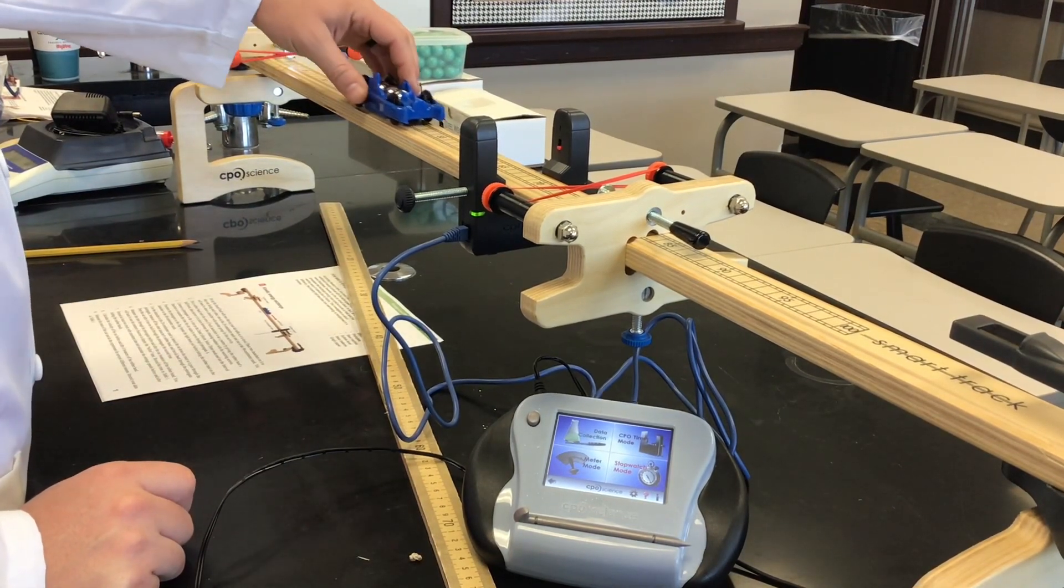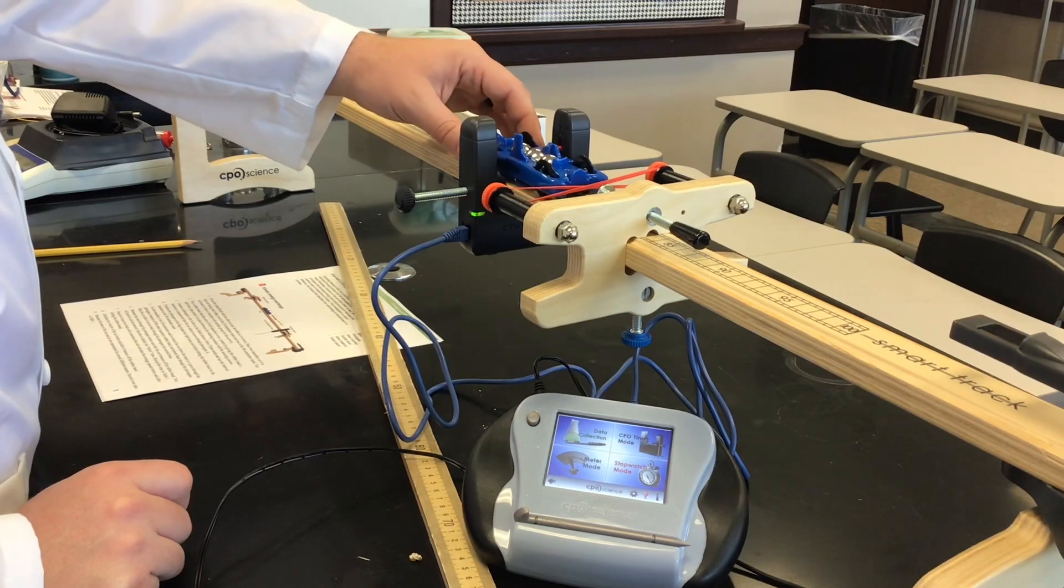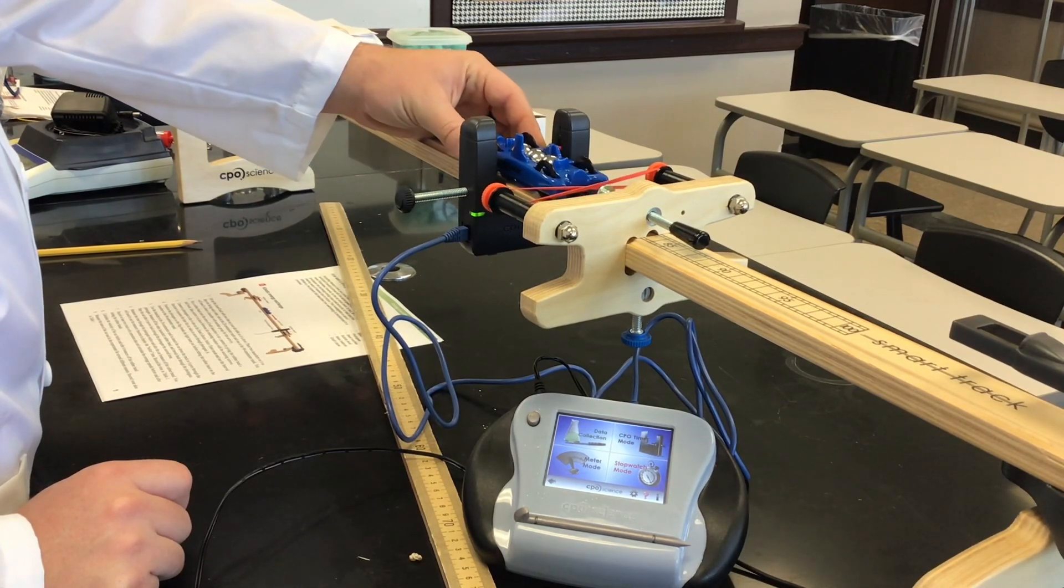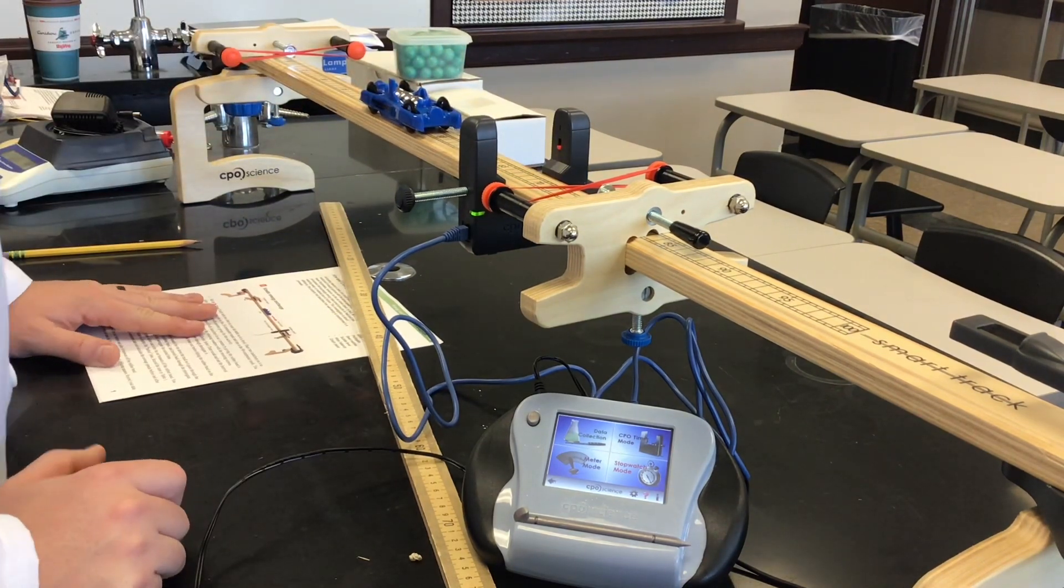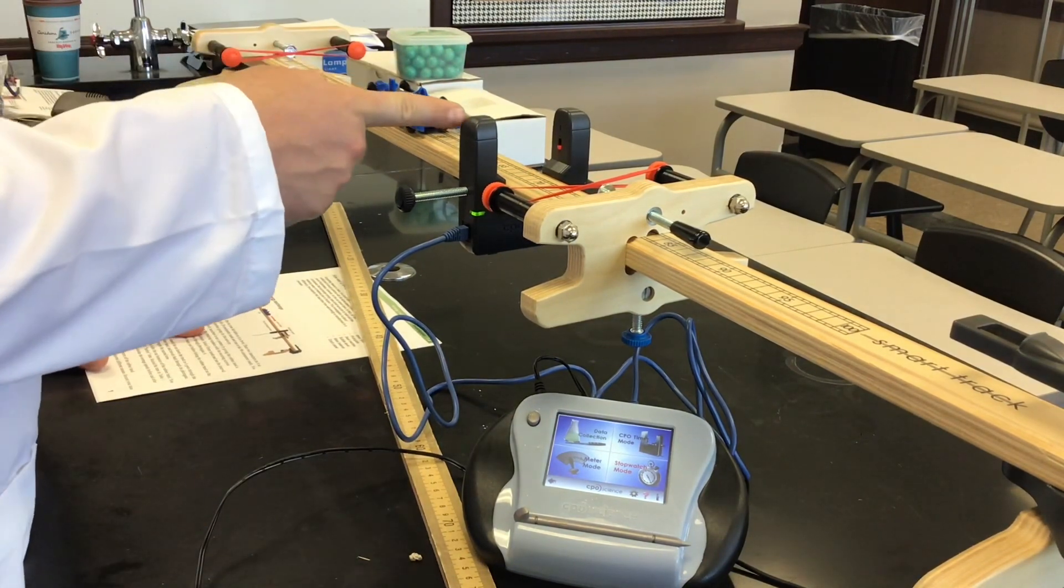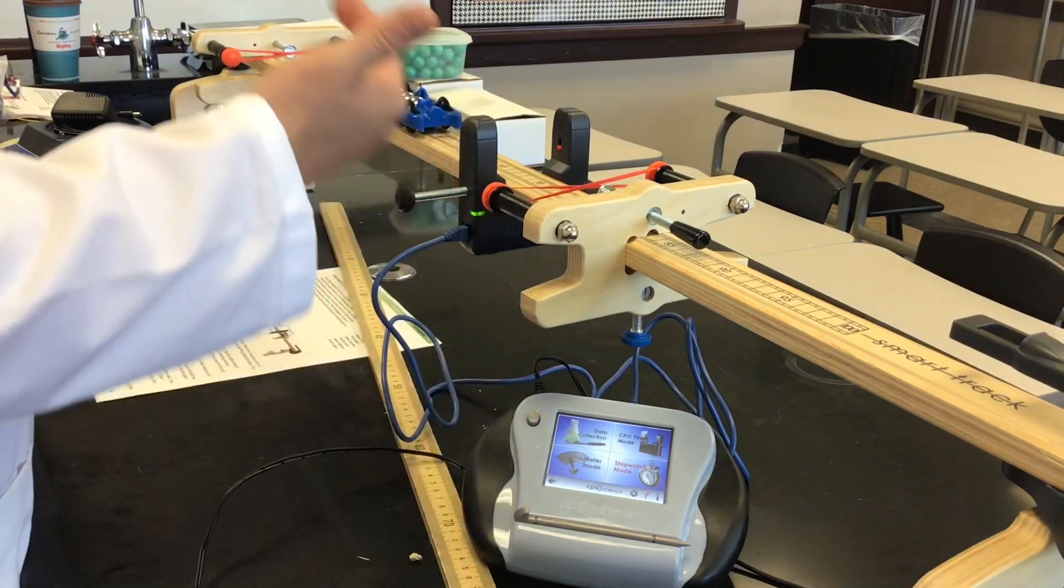They'll launch the car. It's going to come down the track, they'll actually set off the sensor there, they'll bounce off the rubber band and set off the sensor again. What this lab wants to look at is what was the velocity when it went into the rubber band and what was the velocity as it came out of the rubber band.